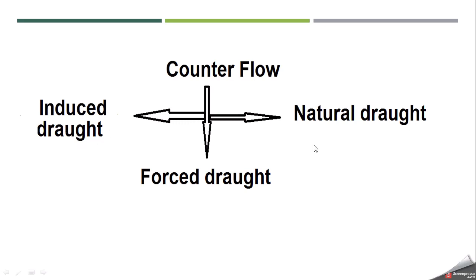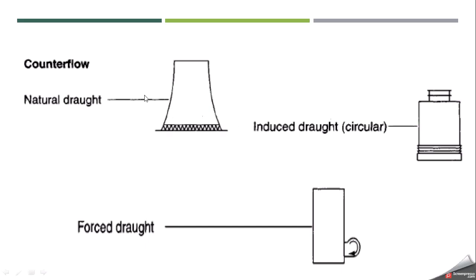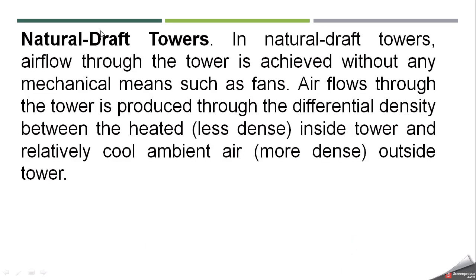Similarly, in counter flow there are three types: natural draft, induced draft, and forced draft. In natural draft towers, airflow is achieved without any mechanical means such as fans. Airflow is produced through the differential density between the heated air inside the tower — which is less dense — and the relatively cold ambient air outside. When air absorbs heat from the hot water, it becomes hotter and less dense, causing it to move upward.